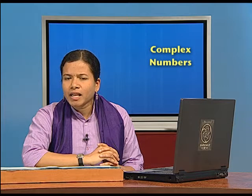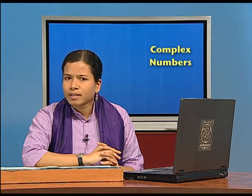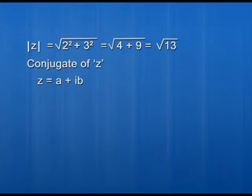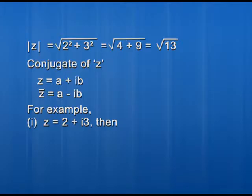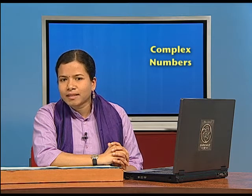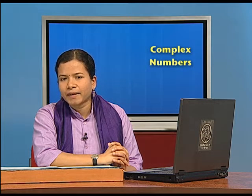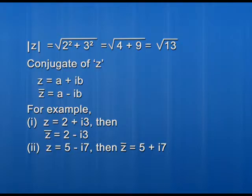Next, let us calculate the conjugate of a complex number. Suppose z equals a plus ib. To find the conjugate of z, we keep the number the same but change the sign of the imaginary part. So the conjugate of z, denoted z-bar, equals a minus ib. For example, if z equals 2 plus i3, the conjugate is 2 minus i3. If z equals 5 minus i7, then the conjugate is 5 plus i7 — the sign is reversed each time.